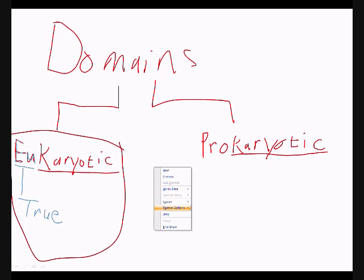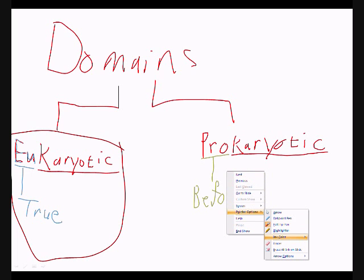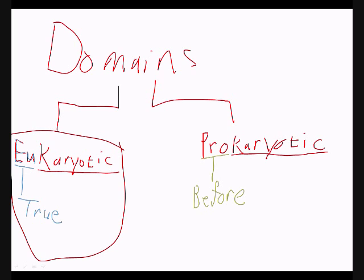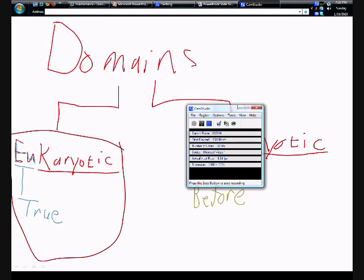Now with Prokaryotic — 'pro' is a prefix that means 'before,' and some of us should remember that from grade school. So 'pro' means before nucleus. The essential difference here: Eukaryotic has a nucleus; Prokaryotic does not have a nucleus. If you have a multiple choice question and that comes up, you know what to put. So I'm going to stop this video here and continue about taxonomy in the next video.